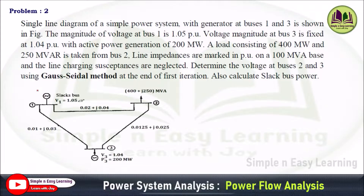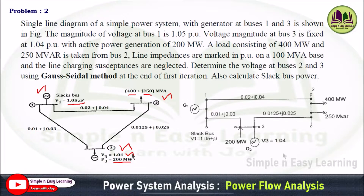The diagram is given. The first bus is a slack bus, where voltage magnitude and angle are specified. The second bus is a load bus, where real power and reactive power are specified. The third bus is a generator bus, where the magnitude of voltage and real power are specified. This diagram can also be represented as: first bus is a slack bus V1 equal to 1.05 plus J0, second bus is a load bus with 400 megawatt and 250 MVAR — a PQ bus. The third bus has real power P and voltage magnitude specified.